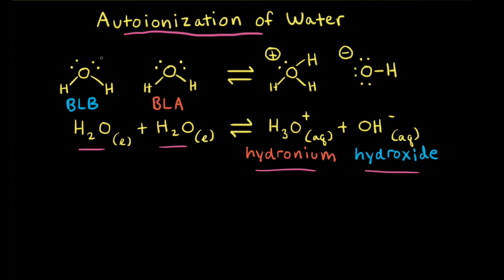In the reaction, the base takes an H+ ion from the acid, and these two electrons are left behind on the oxygen. Adding an H+ to H2O gives the hydronium ion H3O+, and taking away an H+ from H2O gives the hydroxide ion OH-.